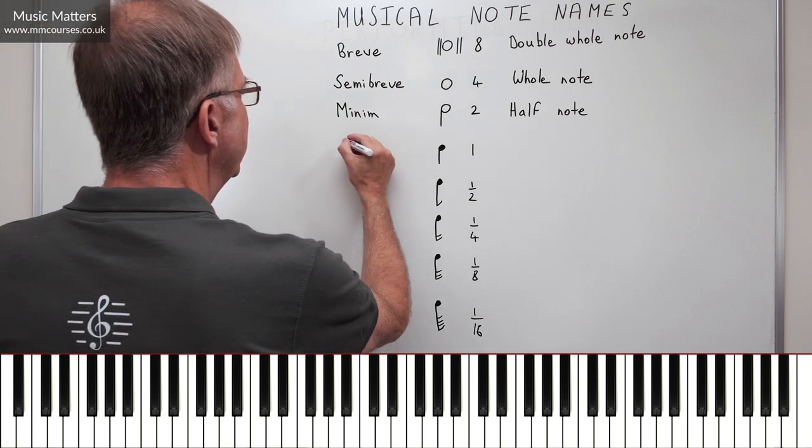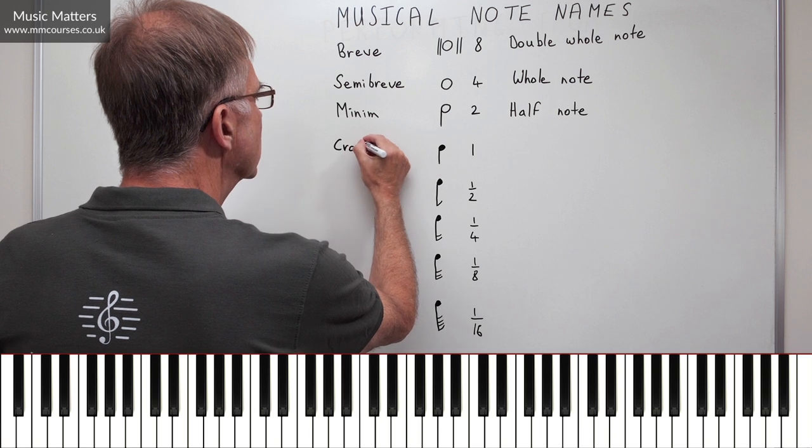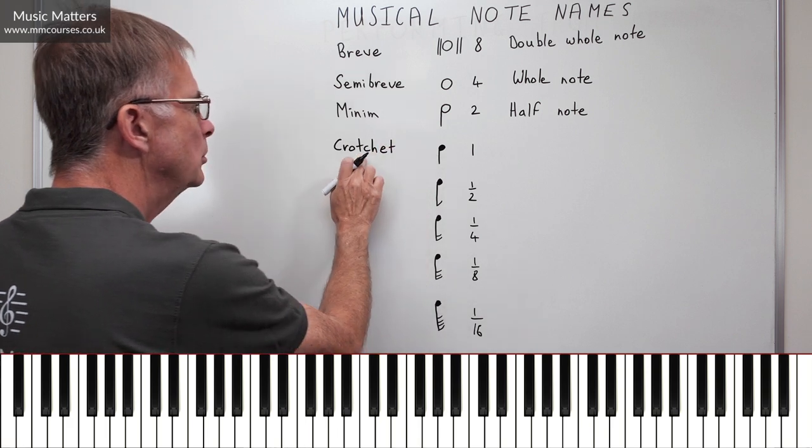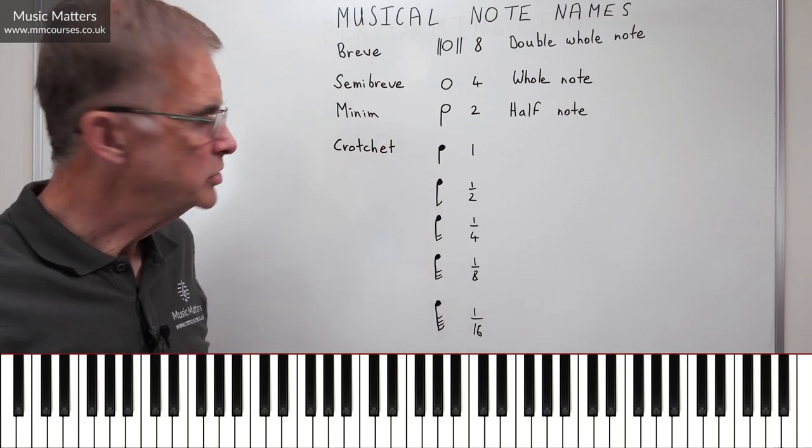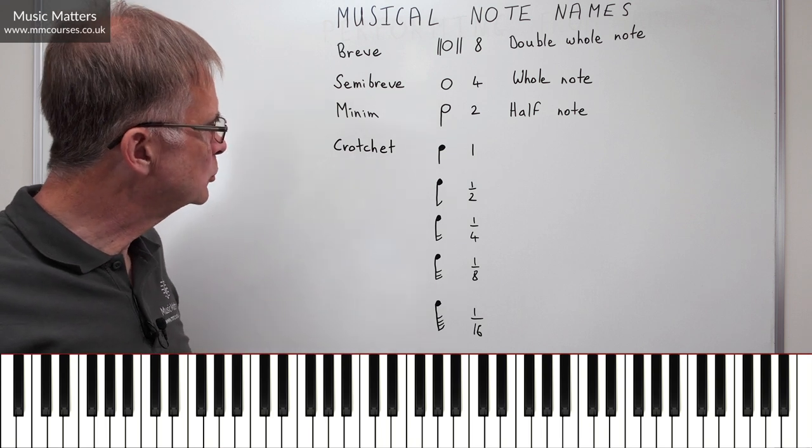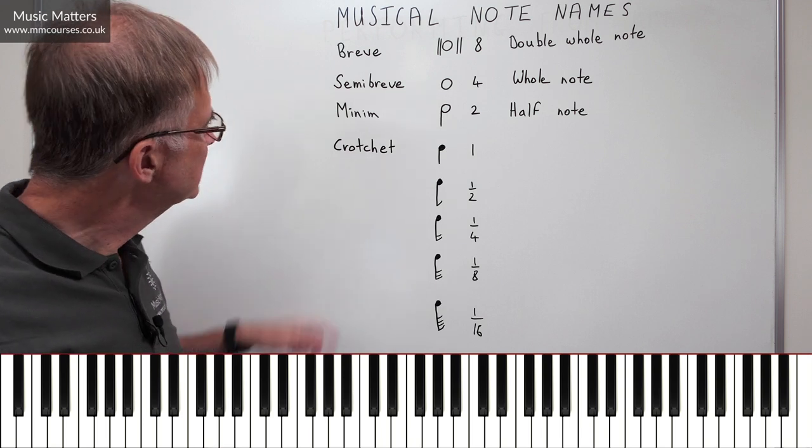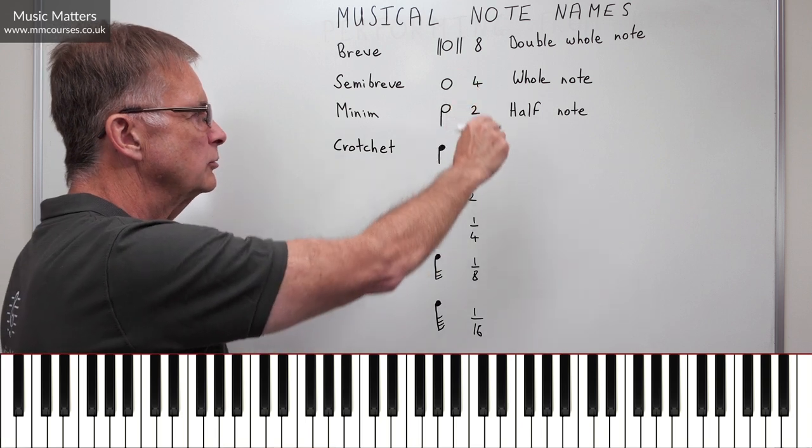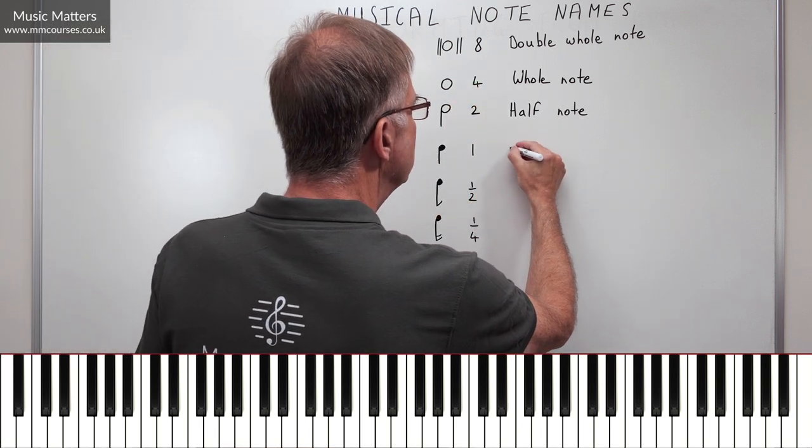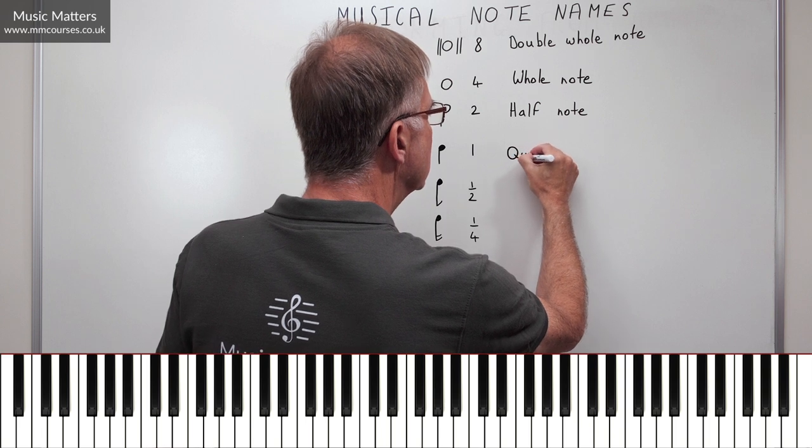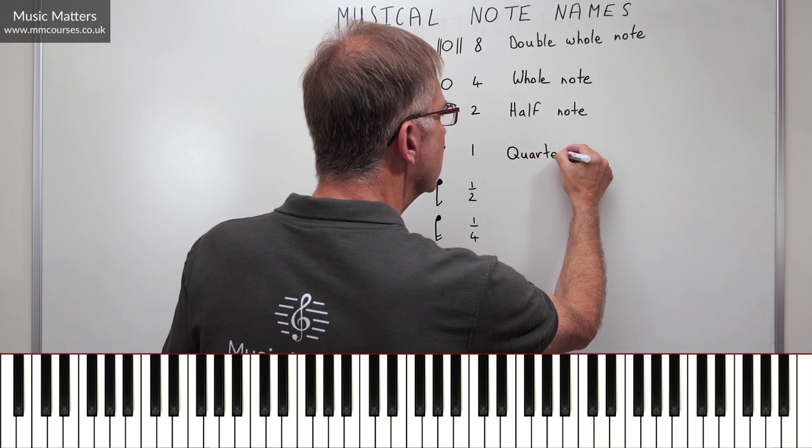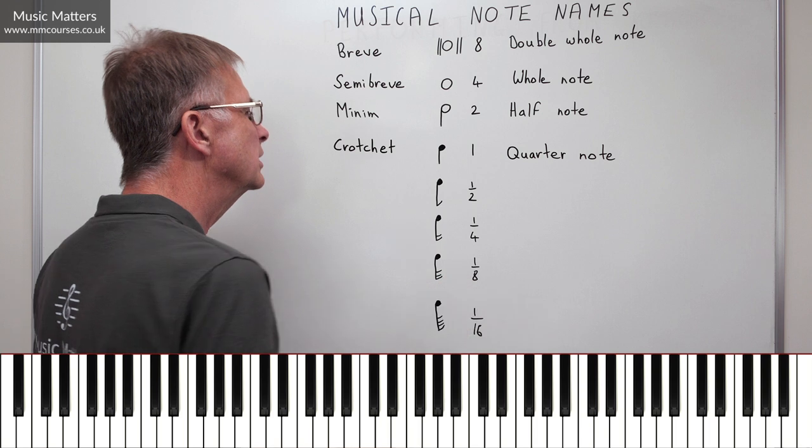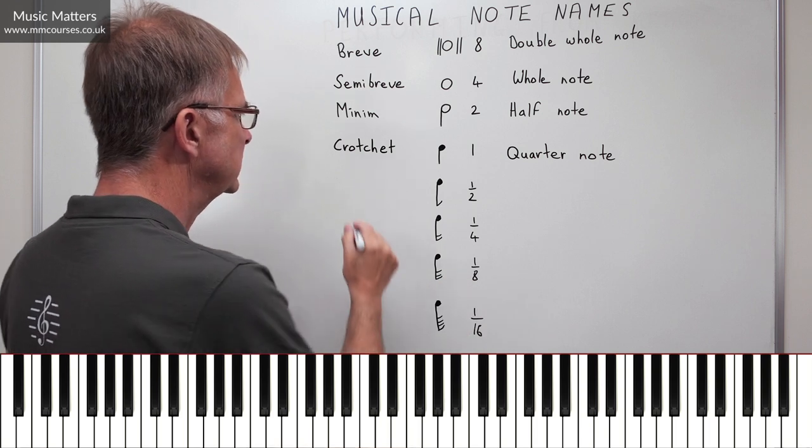This one coming up next, we know as a crotchet. And by the way, if you ever have to write the word crotchet, make sure you put a T in the middle of it. Lots of people spell crotchet with no T in the middle, and then it says crochet, and crochet is a different thing altogether. So a crotchet is a one beat note. Now I wonder if you can see the logic of where the US system is going next, because they call this one a quarter note. So there's the quarter note. So a whole note, a half note, a quarter note. You can see what the logic of this thing is.